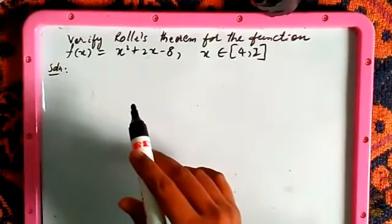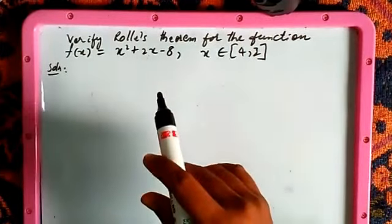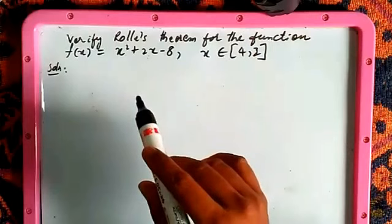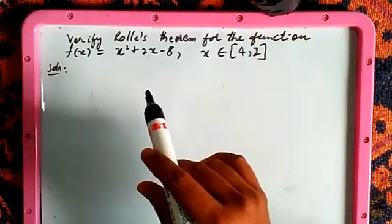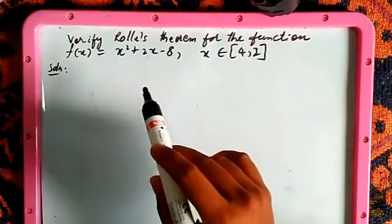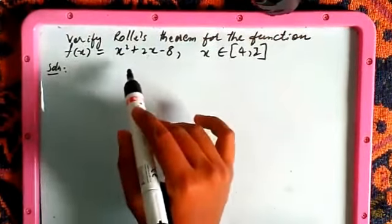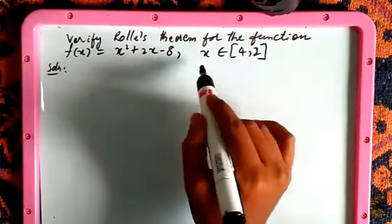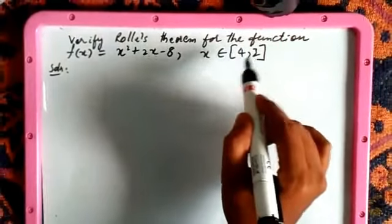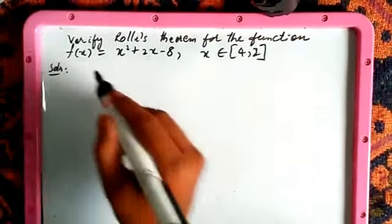Now we are going to see the syllabus of second year in CRT questions, specifically the topic of application of derivatives, in which we are going to verify Rolle's theorem for the function f(x) = x² + 2x - 8, where x belongs to the closed interval [-4, 2].